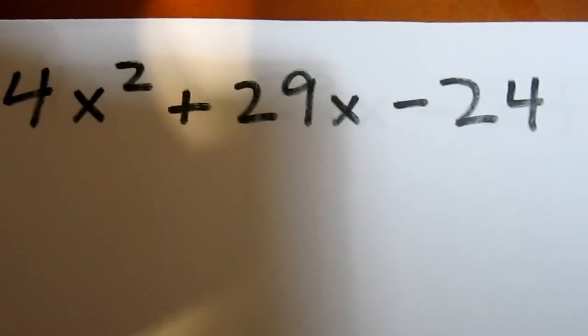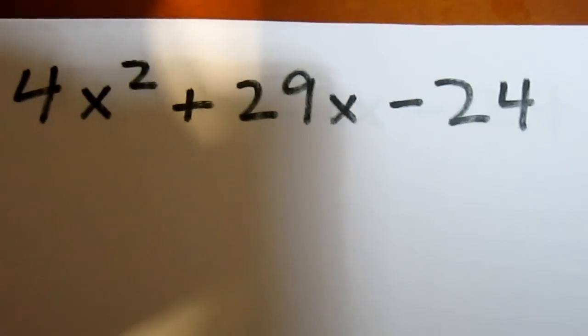We're going to use the criss-cross method here, 4x squared plus 29x minus 24.